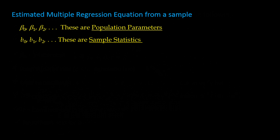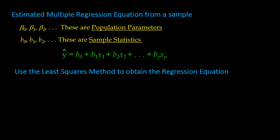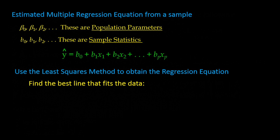Our regression equation using sample statistics will look like our y-hat line from simple linear regression but with extra independent variables, the extra x's and their associated slopes. We will use the least squares method to develop an estimated regression equation. The goal of the least squares line is to find the line that fits our data the best. The least squares criterion is the same as we used in simple regression since the goal is the same: to find the best line that fits our data.